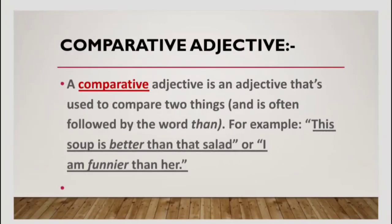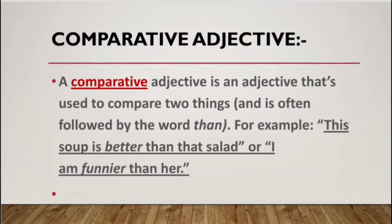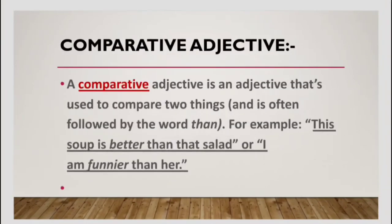Now we are moving to comparative adjective. A comparative adjective is an adjective that is used to compare two things and is often followed by the word 'than.' For example: this soup is better than that salad. I am funnier than her. In positive we said this is good soup, but in comparative we say this soup is better than that salad — two different things being compared with one having better quality.